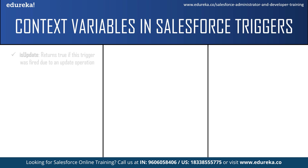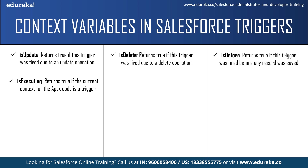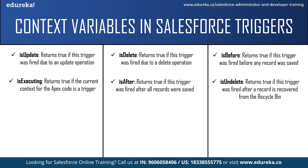The next context variable is isUpdate — this returns true if the trigger was fired due to an update operation. Next is isDelete — this returns true if the trigger was fired due to a delete operation. After this, isBefore returns true if the trigger was fired before a record was saved to the database. isExecuting returns true if the current context for the Apex code is a trigger and not a Visualforce page, web service, or API call. isAfter returns true if the trigger was fired after all records were saved to the database.